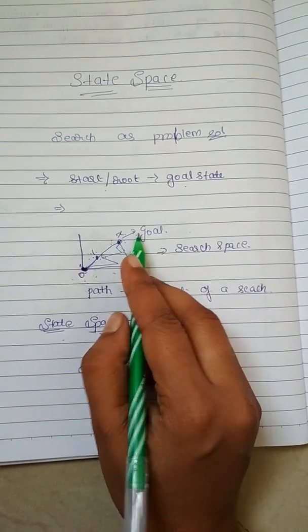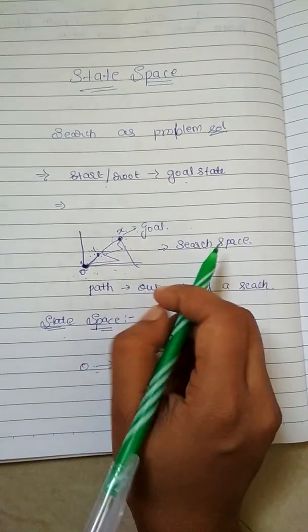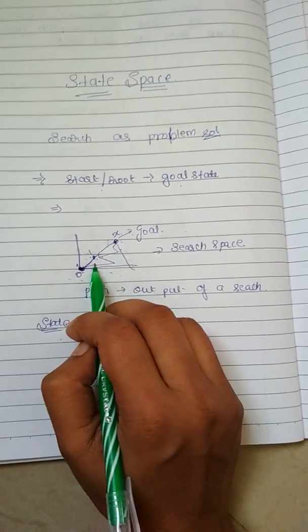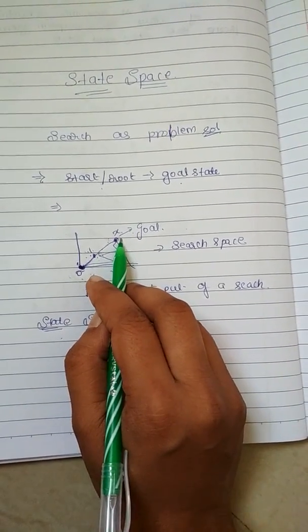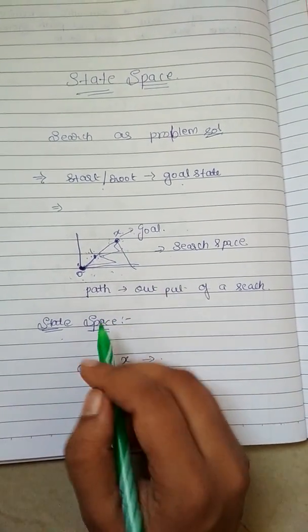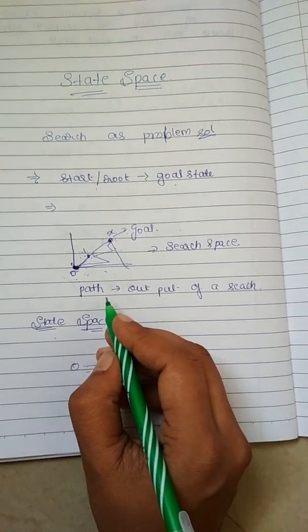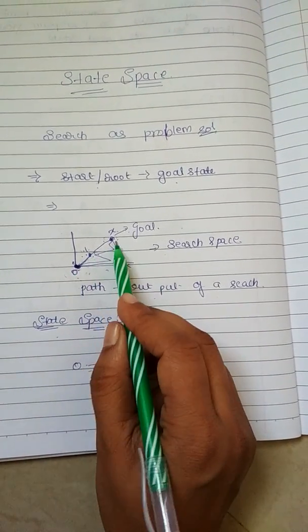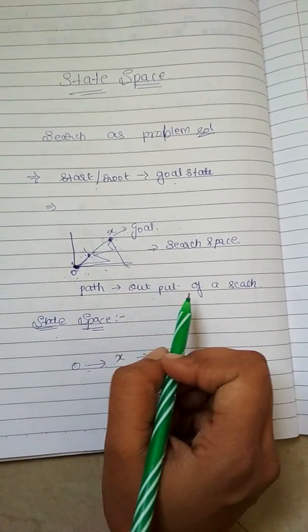These define your path. Search space means what are the states you will go through, what are the operators you will apply in order to reach the goal state. That is called as search space. Path is output of a search - whatever is the path, that will be the output of the search.